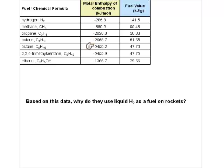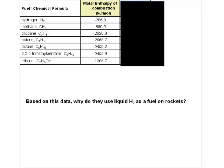Looking at the kilojoules per mole, the one with the greatest enthalpy is branched octane - it gives the most energy per mole. That makes sense from bond energies: with hydrogen we're only breaking one H-H bond, making no wonder the value was small. In octane, we have to break seven C-C bonds and eighteen C-H bonds, so make no wonder the combustion enthalpy value is so large.